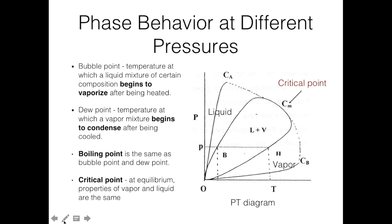The bubble point is the temperature at which a liquid mixture or multicomponent system begins to vaporize after being heated. The dew point is the temperature at which a vapor mixture begins to condense after being cooled. These two definitions are used often in the distillation process and are analogous to the physical chemistry term boiling point. There is also the critical point, defined as the point at equilibrium where the properties of the vapor and liquid are the same.